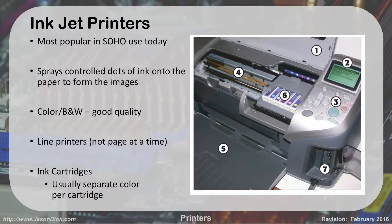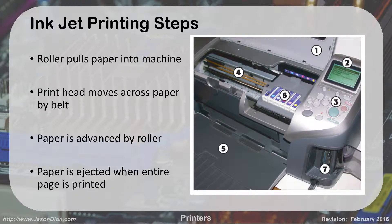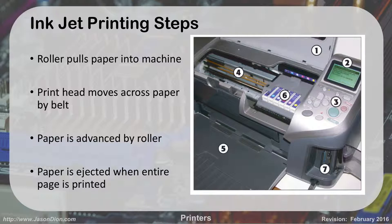Now we call them inkjet because we're spraying ink through these jets. The paper is pulled into the machine, the print head moves across the page on the belt, and each time it goes across, the belt pulls the paper up one more line. It prints again and continues doing that until the whole page is printed. Once done, the page is ejected.